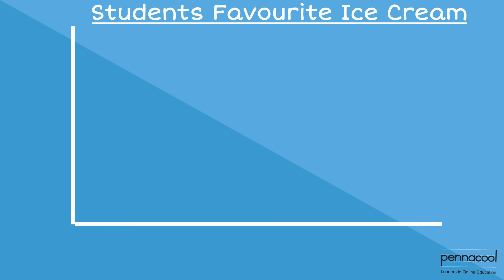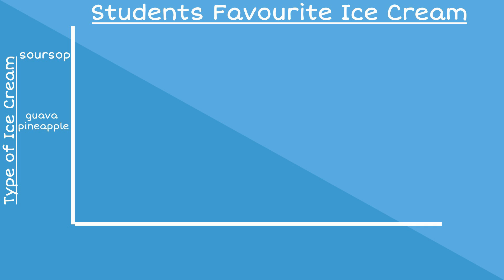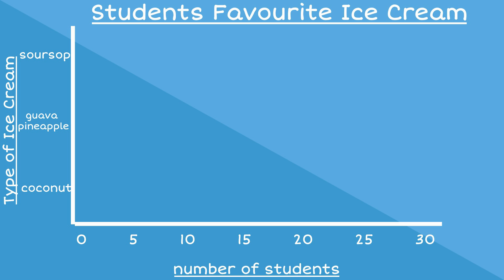Miss Roberts also wants to show her class that bar graphs can be represented horizontally. To do this, she switches the height of her bar graph so that it now represents the different flavors of ice cream. Then she changes the width of the bar graph so that it now represents the number of children. Now she just draws the bars horizontally so they form a horizontal bar graph.